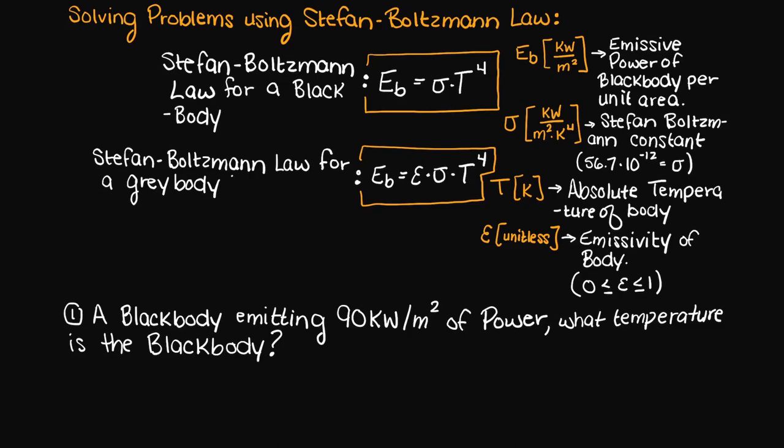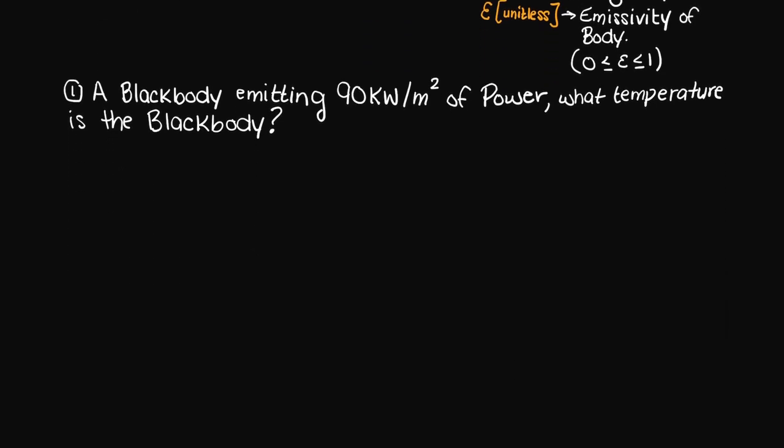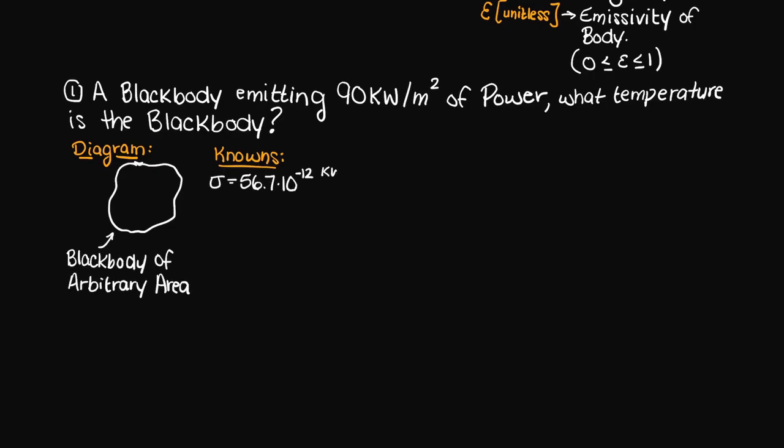To begin any type of engineering problem, I recommend you draw a little diagram here for yourself so that you can better visualize the problem. Next, let's list our known values. So we know the value of the Stefan-Boltzmann constant, and we also know the power emitted from our black body per unit surface area.